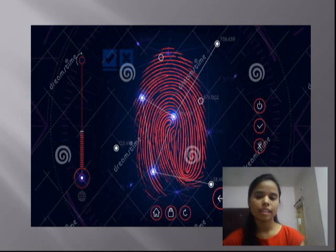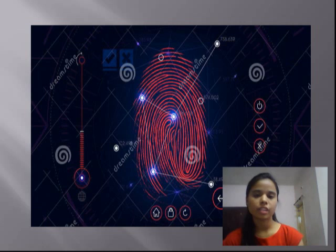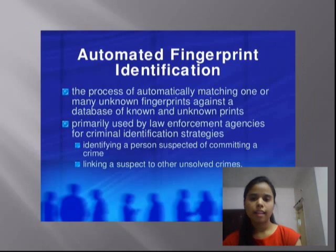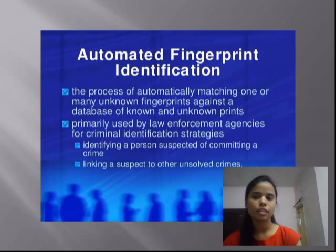This processing of prints is for the purpose of establishing identification and creating an individual's criminal history. The system serves as the central repository for identification records relating to persons arrested throughout the country. The functions of AFIS include the process of automatically matching one or many unknown fingerprints against a database of known and unknown prints, primarily used by law enforcement agencies for criminal identification strategies, identifying a person suspected of committing a crime, and linking a suspect to others' unsolved crimes.